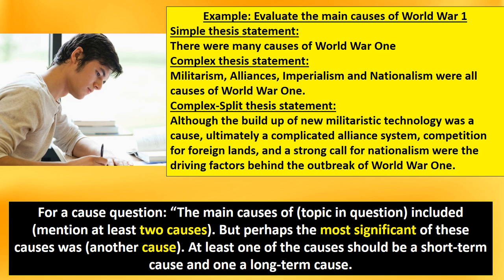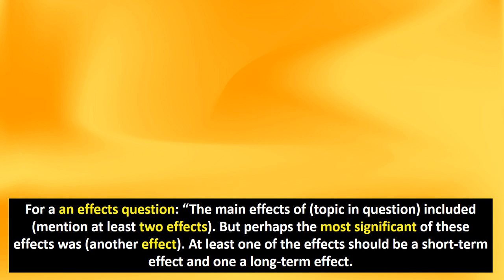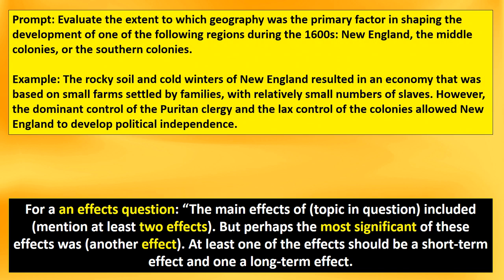Take a look at this example from World War I — a complex split thesis statement where you have your counter argument, your categories of analysis, and then by the end it's talking about these causes being the most significant reasons for why World War I even happened. For an effects question, you're essentially doing the same thing: the main effects of World War I included these two things, but perhaps the most significant was this. Here's a 1600s, 13 colonies example — you begin with your counter argument first: that rocky soil and cold winters in New England resulted in an economy based on small farms with relatively small numbers of slaves. However, the dominant control of Puritan clergy and the lax control of the colonies allowed New England to develop political independence.